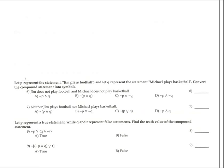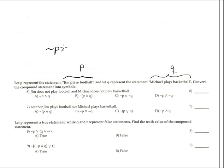Number six: P represents 'Jim plays football' and Q represents 'Michael plays basketball,' connected by 'and.' The compound statement to convert into symbols is 'Jim does not play football and Michael does not play basketball,' which is negation P conjunction negation Q.